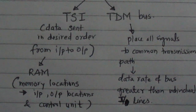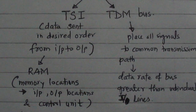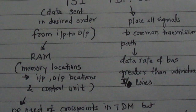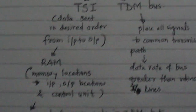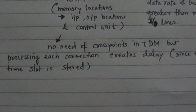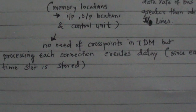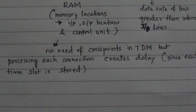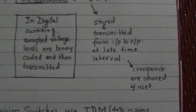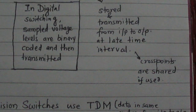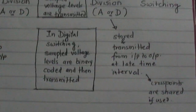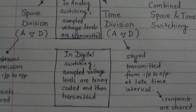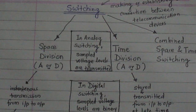In TDM bus, all signals are placed on a common transmission path. The data rate of the bus must be greater than the data rate of the individual input/output lines. There is no need for cross points in TDM bus, but processing each connection creates delay because each time slot is stored. However, if cross points are used, they can be shared — though they are not necessarily required in TDM.